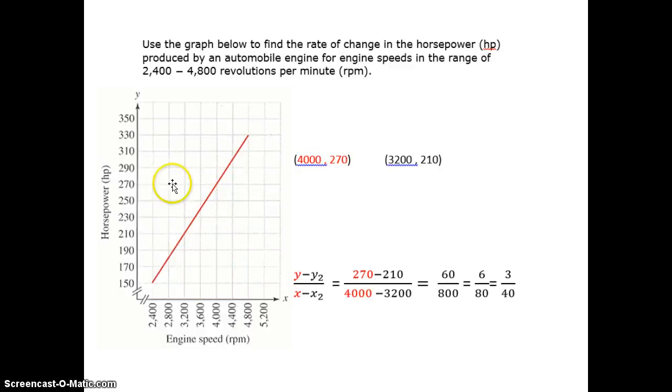We're going to use the graph here to find the slope of this line, and slope is just another way of saying the rate of change of the line. So identify any two points on the graph.